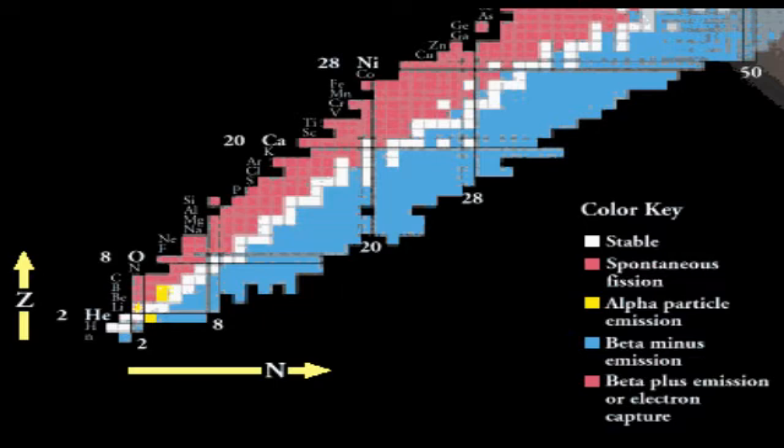The horizontal axis shows the number of neutrons. Atoms that are stacked vertically are isotones, since they have the same number of neutrons, but a different number of protons.